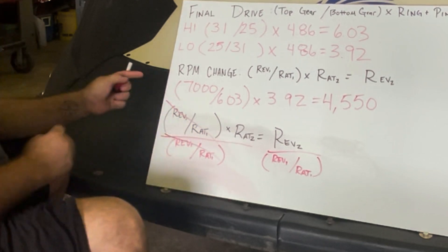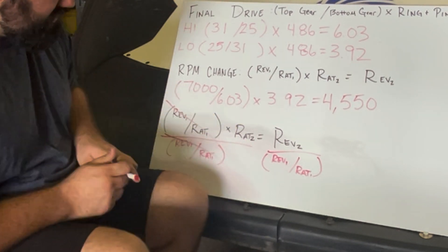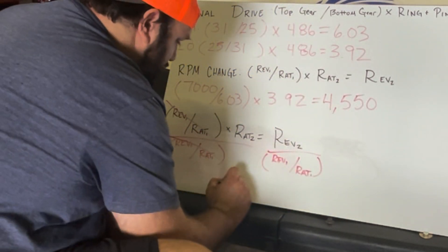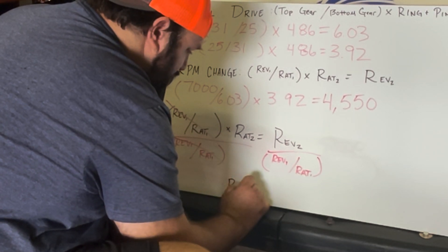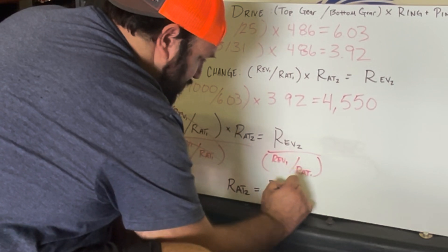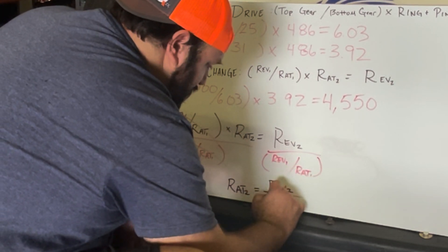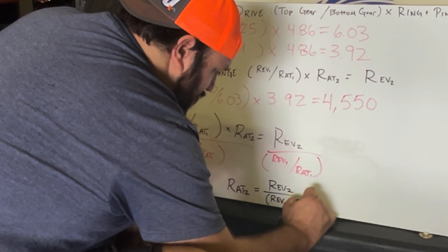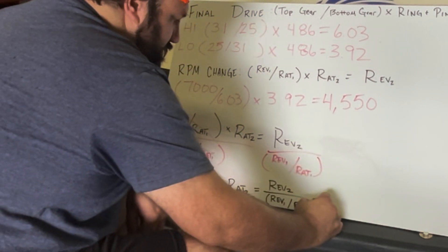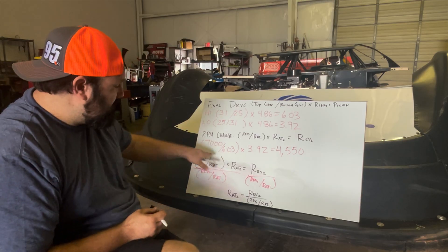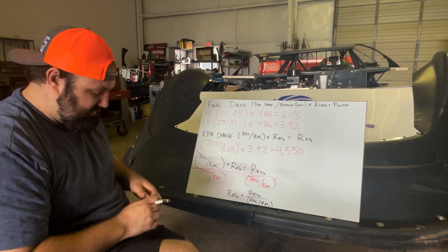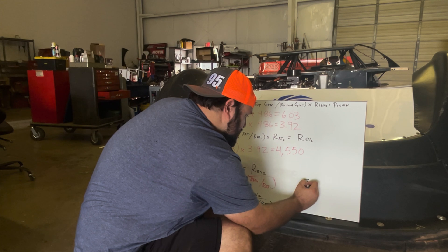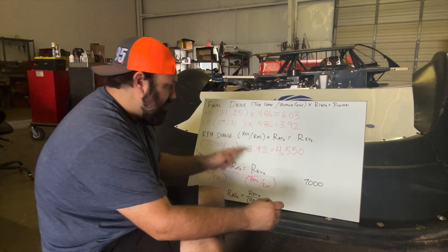We've now isolated ratio two. Our new equation is: ratio two equals rev two divided by (rev one over ratio one). Let's do an example using the same scenario: rev one is 7,000 RPM and we have a 6.03 in the car.